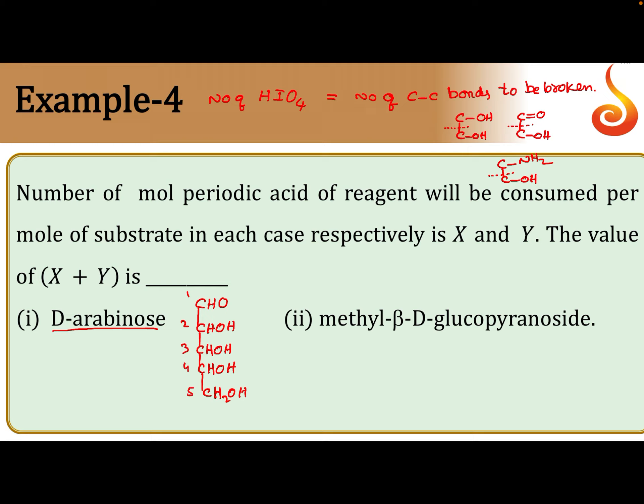If you observe clearly, the C4-C5 bond is eligible for oxidative cleavage with HIO4. Similarly, C3-C4, C2-C3, and even C1-C2, because at C1 a double bond is there, C=O, and at C2 OH is there. That is why the C1-C2 bond is also eligible for breaking. So one mole of D-arabinose can take four moles of HIO4. X is four.